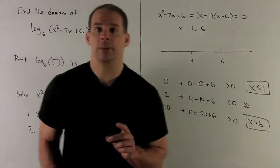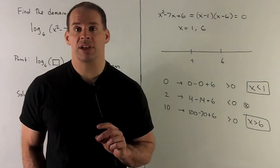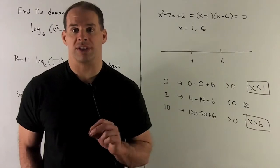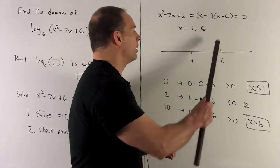So first, let's factor. I'm going to get x minus 1, x minus 6. So our zeros are at 1 and 6. Draw my real number line, mark off 1, mark off 6.